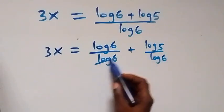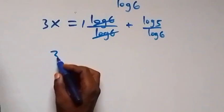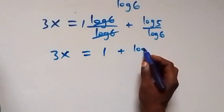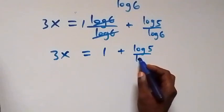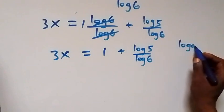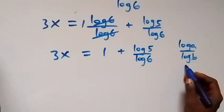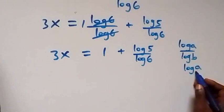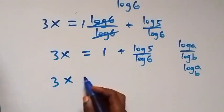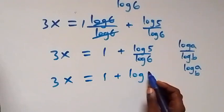Here log 6 cancels log 6, giving 1, so this becomes 3x equals 1 plus log 5 over log 6. Applying the change of base formula — log a over log b equals log a to base b — we can write this as 3x equals 1 plus log 5 to base 6.